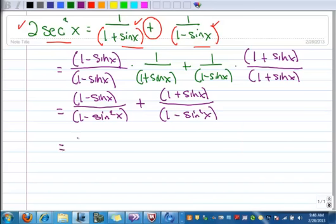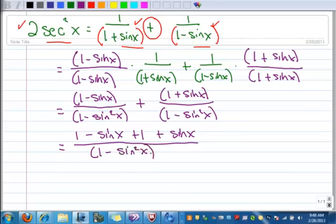And as I do that, I'm going to drop the parentheses on the top. So I have 1 minus sine x plus 1 plus sine x. That's all in the numerator. And then the denominator is 1 minus sine squared x.